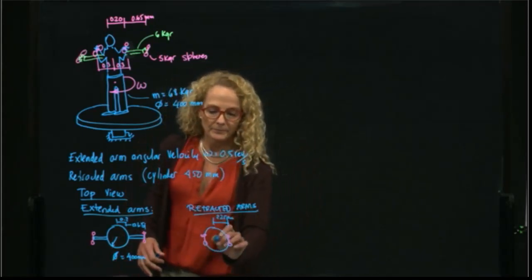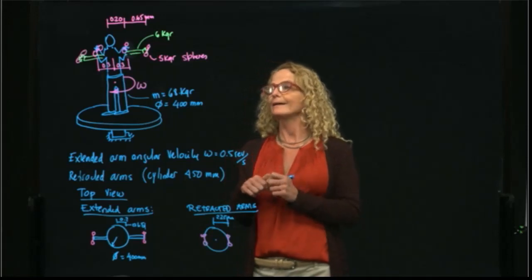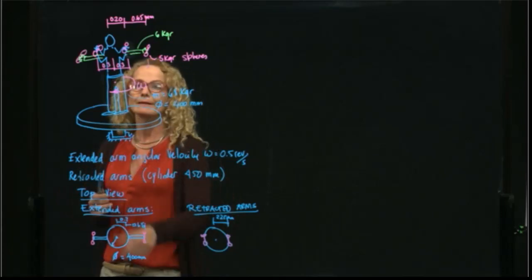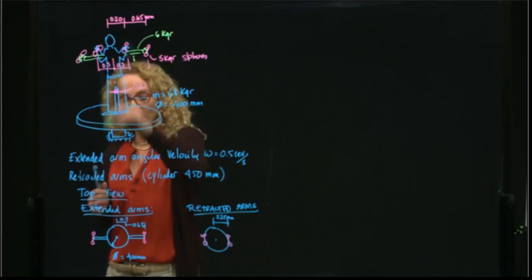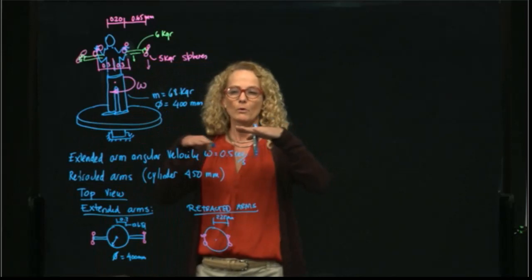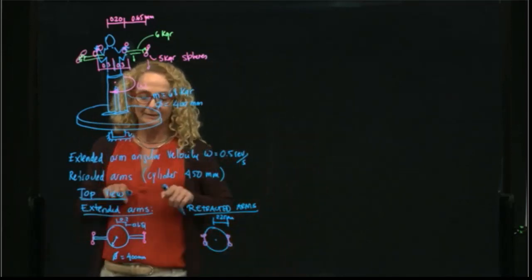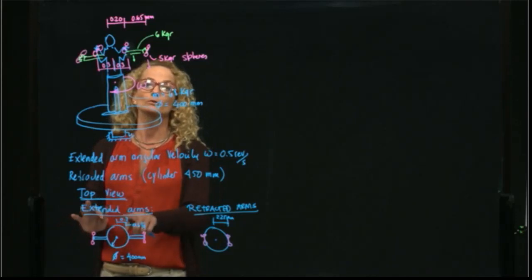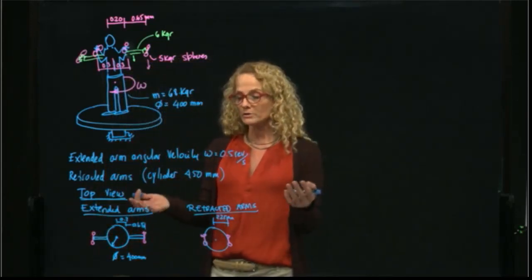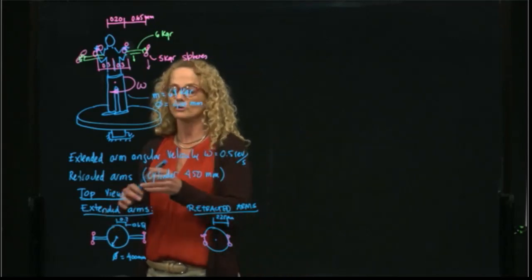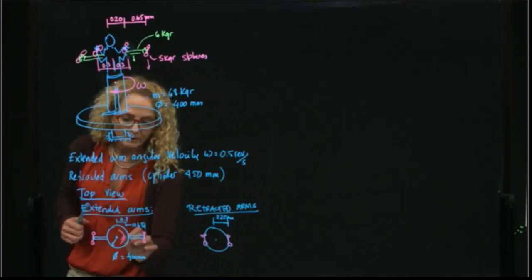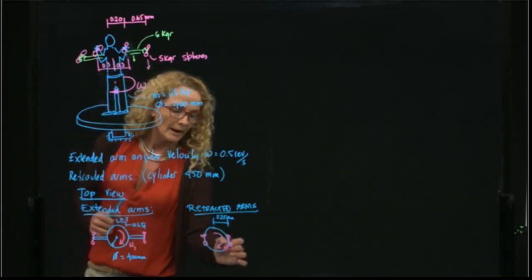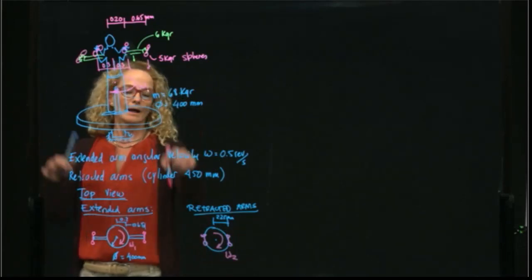This cylinder in the retracted position has a diameter of 425 millimeters, so the radius will be 225 millimeters. Now, if we take the moment with respect to the top view, the weight of the arms and the weight of the person are perpendicular to the plane of motion. The angular velocity in position 1 is when the arm is extended, and position 2 is when it is retracted.